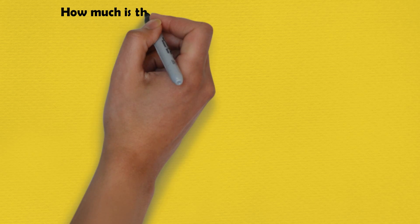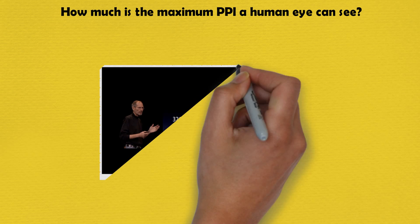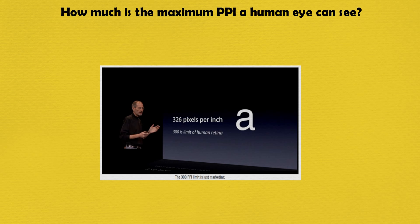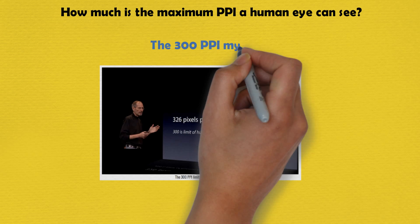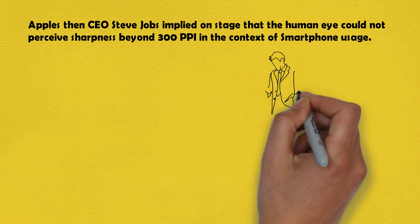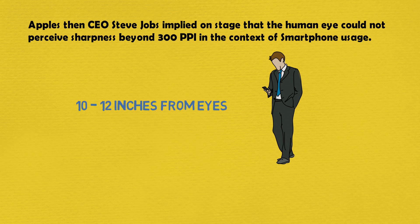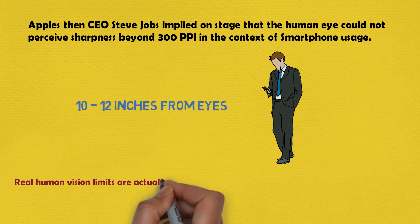Another question you might want to ask before buying your next screen is: how much is the maximum PPI a human eye can see? I want to clear one myth. You may have heard that the human eye cannot distinguish details beyond 300 PPI. During the launch of the iPhone 4, Apple's then CEO Steve Jobs implied on stage that the human eye could not perceive sharpness beyond 300 PPI in the context of smartphone usage, considering you hold your phone at 10 to 12 inches from your eyes. There was a lot of controversy, but astronomer Phil Plait wrote a good article saying that it depends on how you look at it. Jobs' 300 PPI claim may be remotely true only if you use 20/20 vision as a reference, but the big caveat is that 20/20 vision does not represent perfect vision.